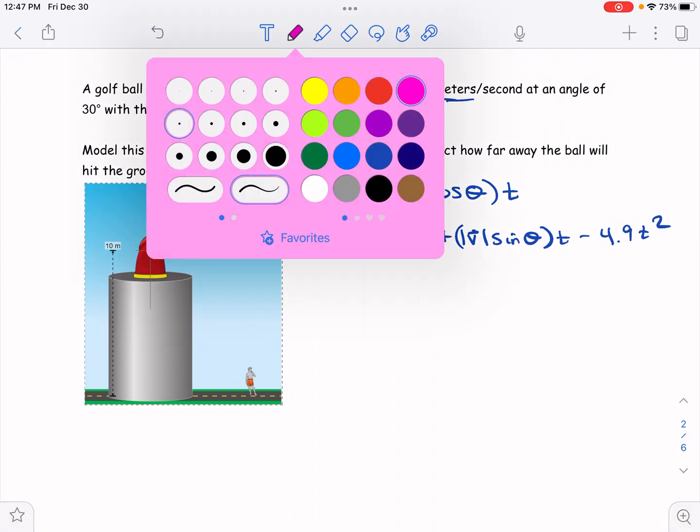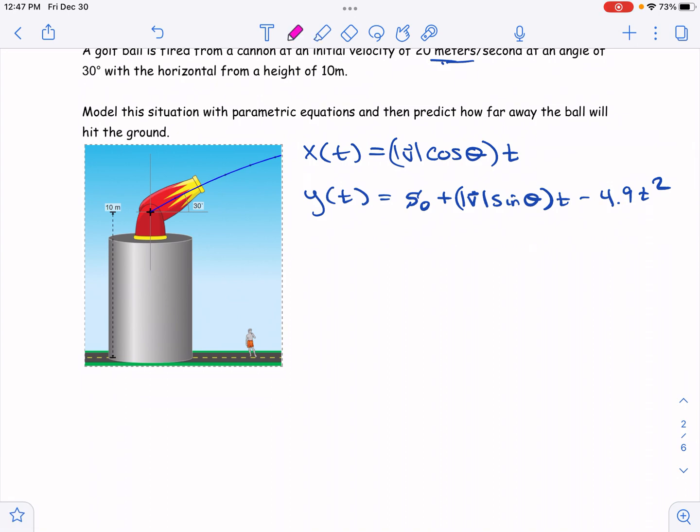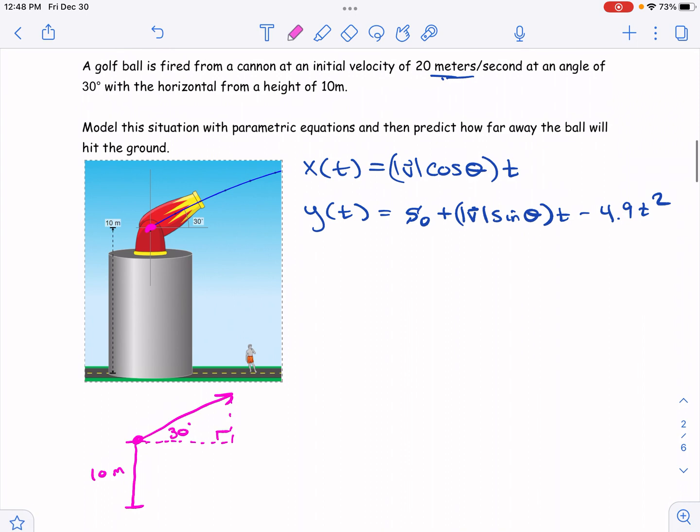All right, so we don't always have to draw a picture because we sort of derived it in the last page. But just one more time, like what's going on here? We can see that this object's being launched right from that location, right? So if we kind of redraw it here, so the initial height is 10 meters. It's being launched in this direction, which is 30 degrees. And it's being launched at 20 meters per second. So I'll just label this 20 meters per second.